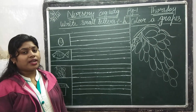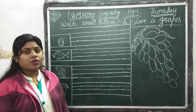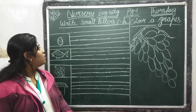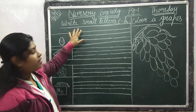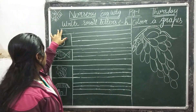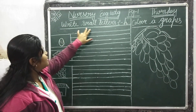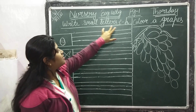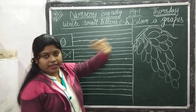Very good morning, nursery children. Today we are going to do English writing. So children, take out your English writing copy. We will write small letters E to H.